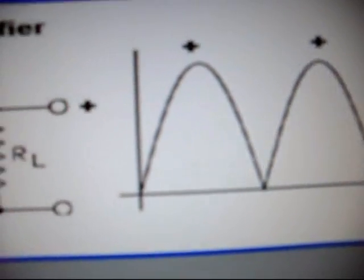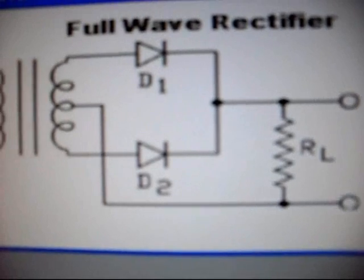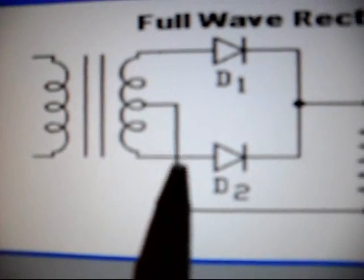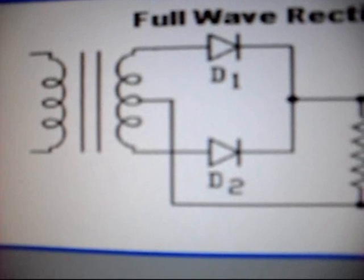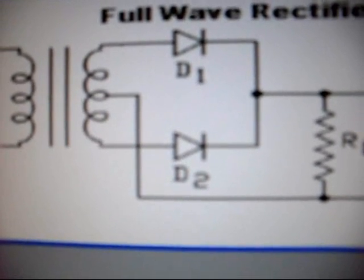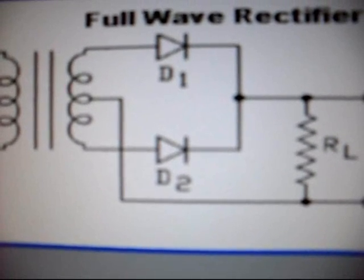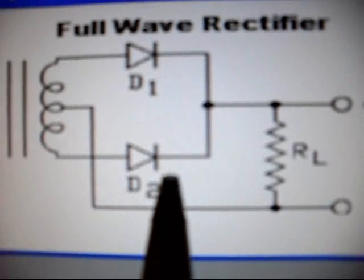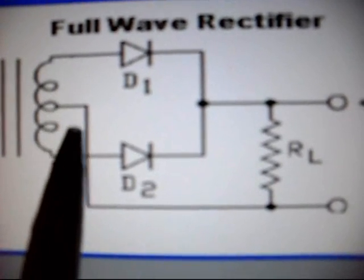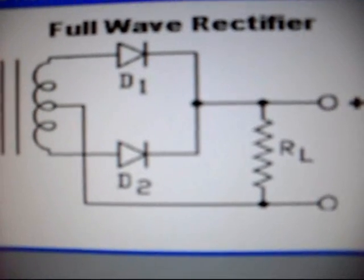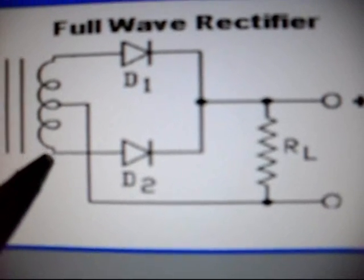A full-wave rectifier must use a center tap transformer. It is required in order to make the circuit work properly. First of all, the two diodes and two halves of the transformer work alternately. They can handle twice as much current as either one working alone.